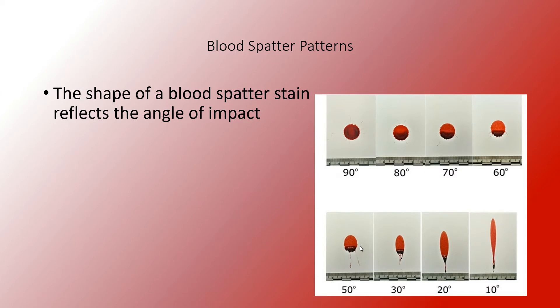I'll explain what satellites and spines are shortly. As you go down to 20 and even 10 degrees, it's not as jagged at the edges — very elongated. And then you're going to have what we call satellites on the end of that.